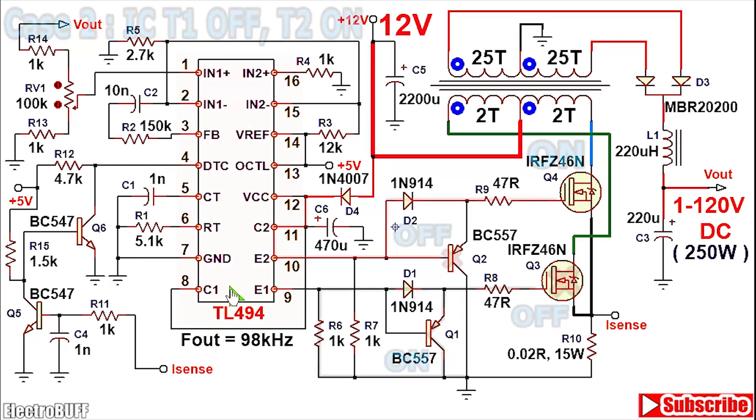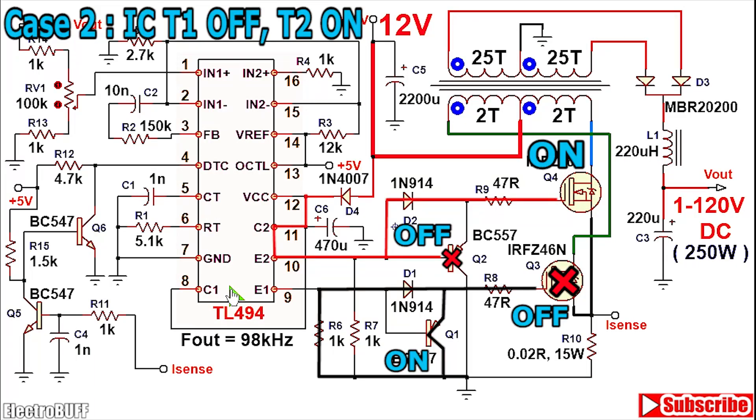In the next stage, now you have the first output transistor of the IC disabled and the second one on. So you have a low output at pin 9 and a high output at pin 10. When this happens, the resistor R6 will pull down the base of the transistor Q1 to ground causing it to turn on and this will pull down the gate of the MOSFET Q3 to ground or the negative rail as shown through the resistor R8 causing Q3 to turn off.